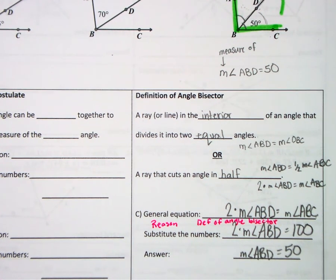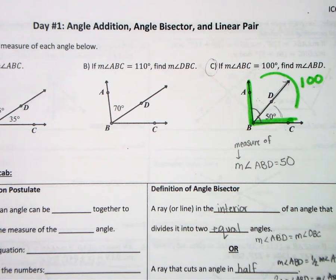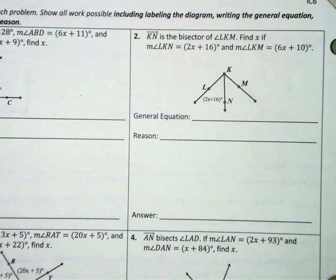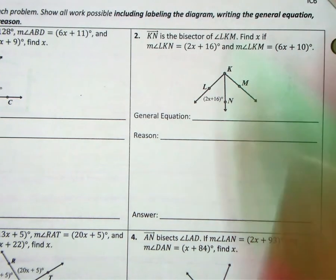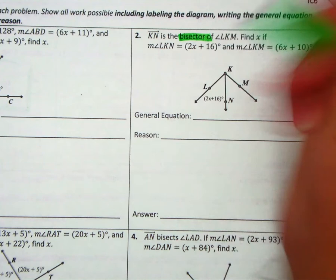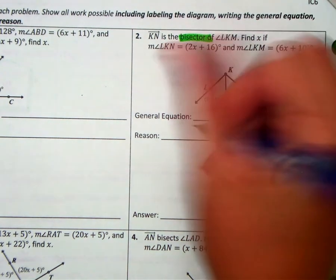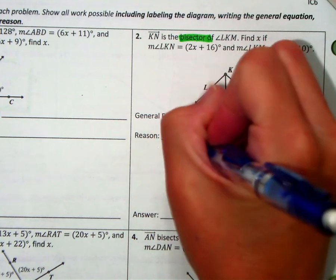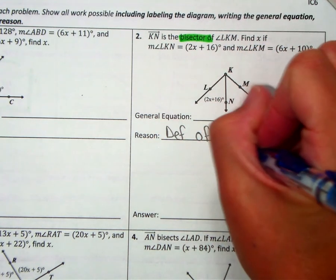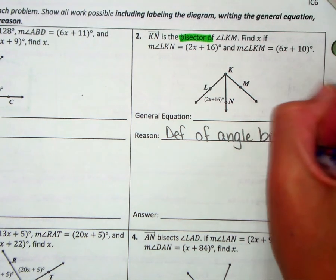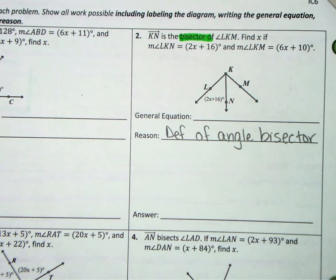Okay, so let's turn the page and let's actually do one of these problems. We'll start with number two on the top. Just like when we were using midpoint, if the problem has the vocabulary word in it, then the reason for my general equation is going to be definition of angle bisector. That's the easy part. The hard part is the general equation or the equation overall.